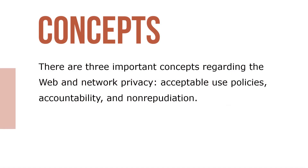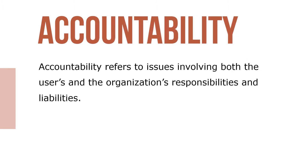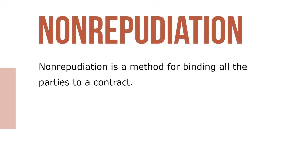There are three important concepts regarding the web and network privacy: acceptable use policies, accountability, and non-repudiation. An acceptable use policy is a set of rules specifying the legal and ethical use of a system and the consequences of non-compliance. Accountability refers to issues involving both the users and the organization's responsibilities and liabilities. Non-repudiation is a method for binding all of the parties to a contract.